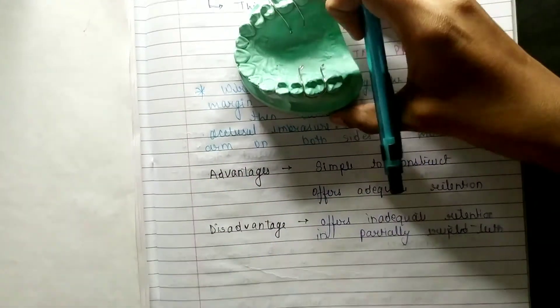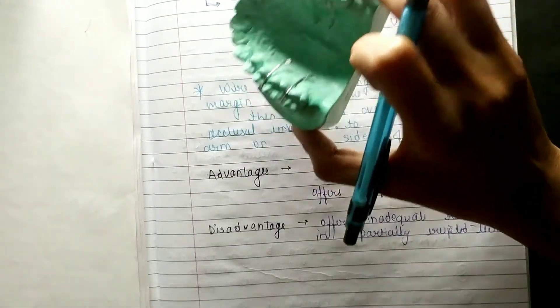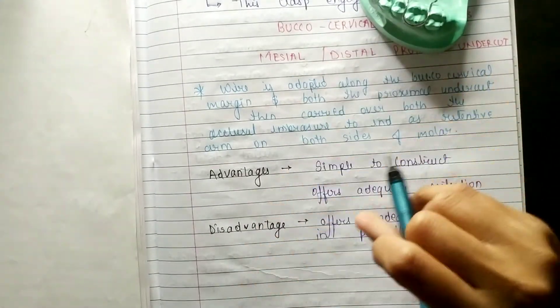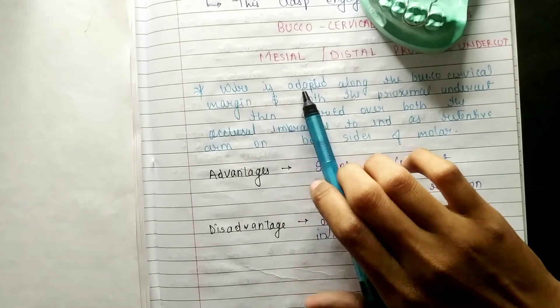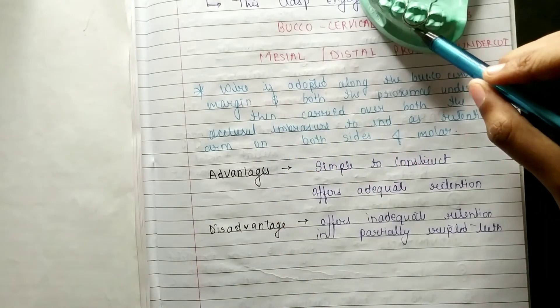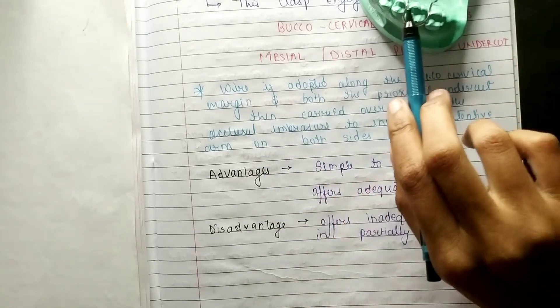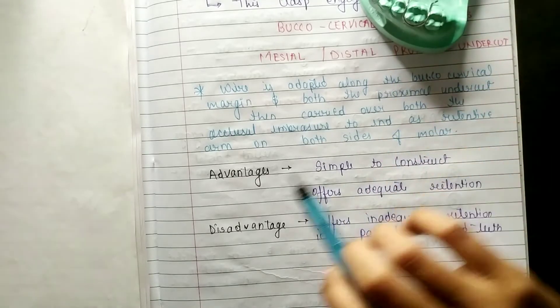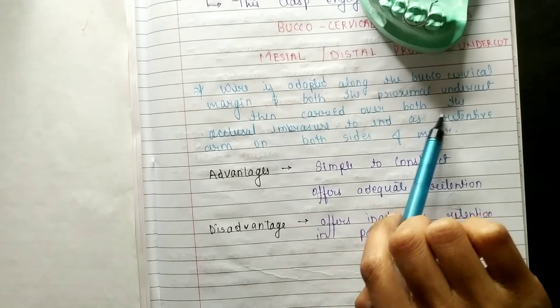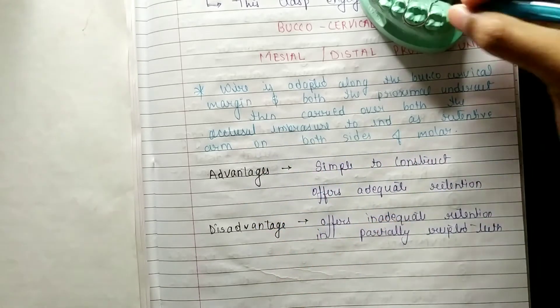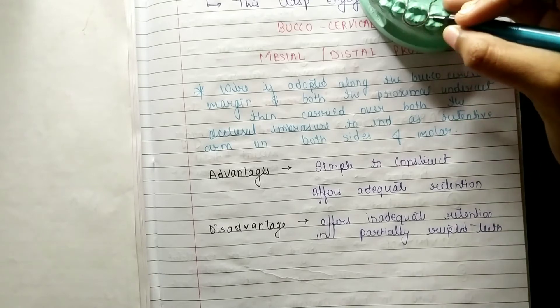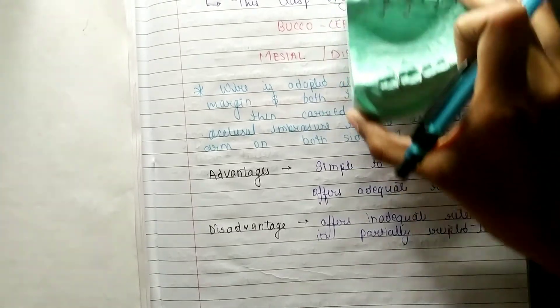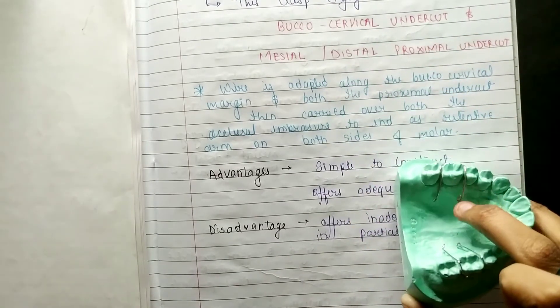So fully erupted tooth, you can use this. Now if you have a short note, you can see this. The wire is adapted along the buccal cervical margin and both on the proximal undercuts, that is mesial and distal proximal undercuts that carried over both the occlusal embrasures.